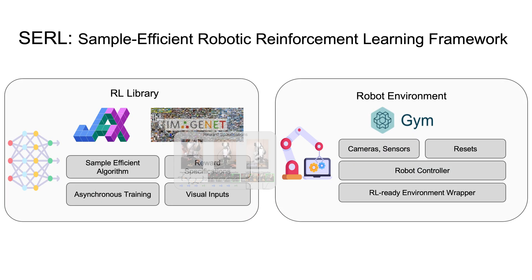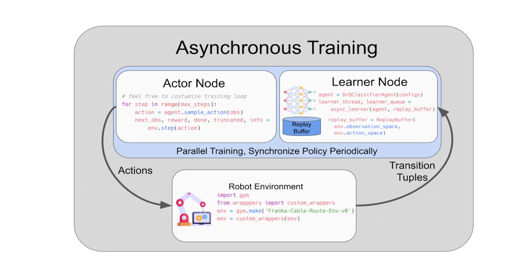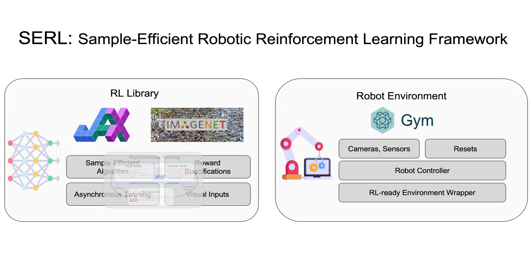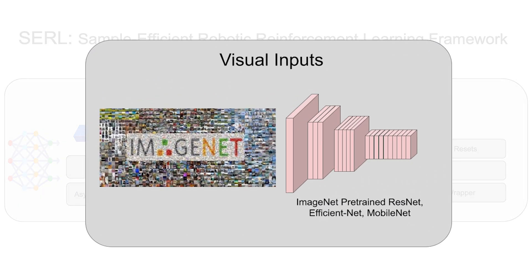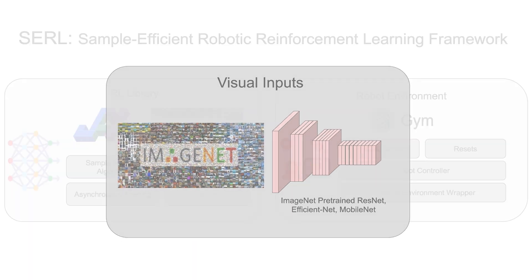To speed up training in wall-clock time, Xero also supports asynchronous training and inference, where the actor and the learner act in parallel. To better handle image observations, Xero provides the ability to load and use visual encoders with ImageNet pre-trained weights.